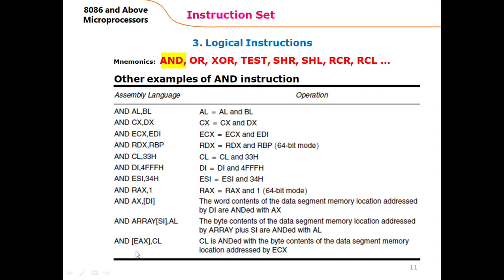AND [EAX], CL ANDs the 8-bit content of CL with the byte at the data segment memory location addressed by EAX. EAX stores an offset address; it is added to the data segment value to identify the memory location, and the result is stored at that memory location. Note that this instruction cannot be executed on the 8086 microprocessor because EAX is not available in 8086 — it is available in 80286 and above.